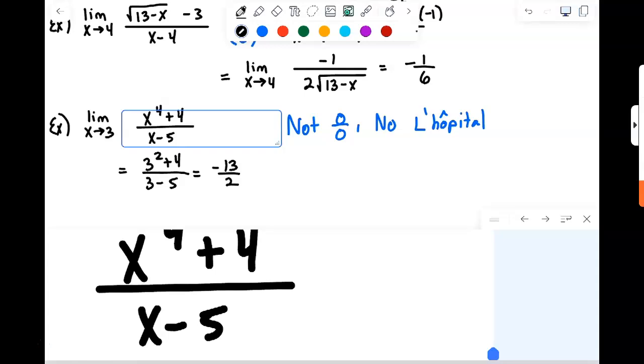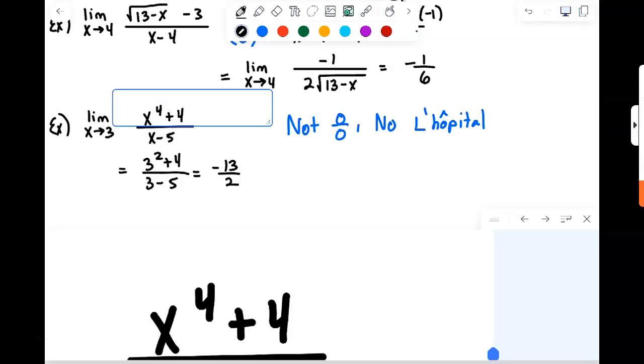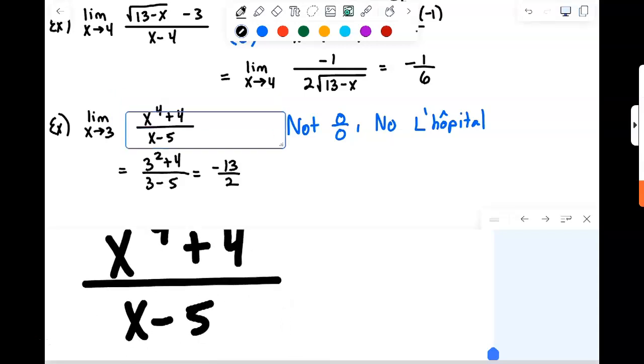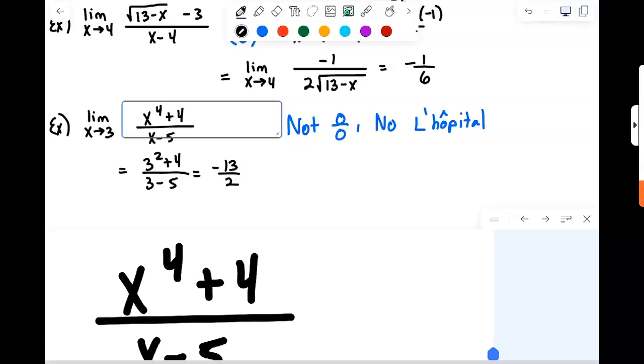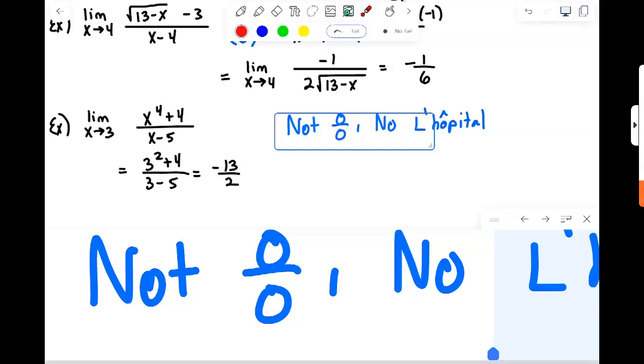And you can see if you try to do this derivative at the top, derivative at the bottom stuff, you're going to get a wrong answer. That'll be 4X to the 3rd on top and 1 on the bottom. If you plug 3 into 4X to the 3rd, you're going to have 4 times 3 cubed, 4 times 27, which is 108, divided by 1, which is 108, which is definitely not negative 13 halves. So very important with L'Hôpital's rule that you only use it when it applies, and that requires us to have a 0 over 0 limit right now.